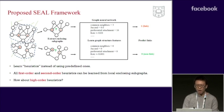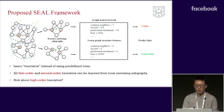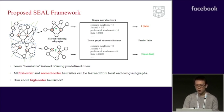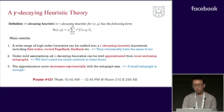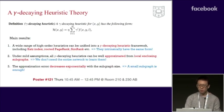But what about high-order heuristics? We know that high-order heuristics often have better performance at the cost of requiring the entire network. Does this mean we need to extract the entire network in order to learn high-order heuristics? The answer is no. We developed a gamma-decaying heuristics theory to support it.